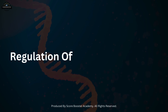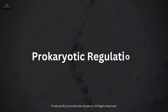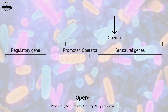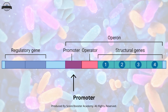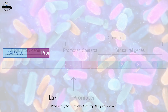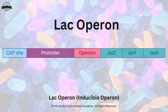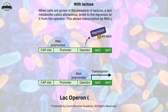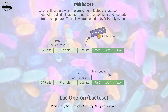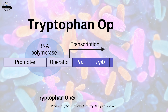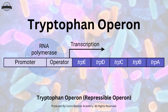Regulation of transcription in prokaryotes often involves operons, which are clusters of genes under the control of a single promoter. The lac operon is an example of an inducible operon, where the presence of an inducer molecule, lactose, triggers transcription. Conversely, the tryptophan operon is a repressible operon that is turned off when the end-product tryptophan is abundant.